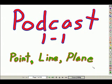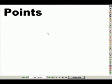Welcome to Podcast 1-1 Point Line Plane. Points. To draw a point, we draw a dot. The size of a point is irrelevant. They don't really have size, but we draw something. So this is how we draw points.